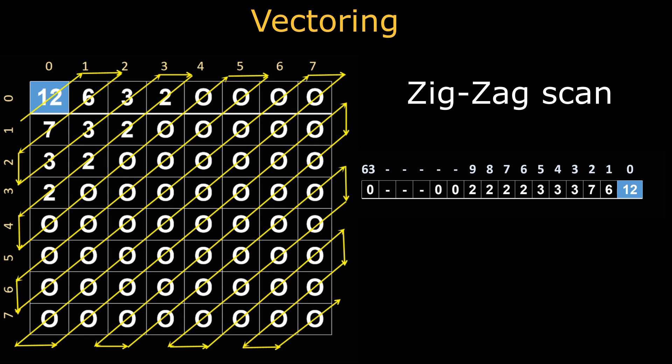In a vector there is only one DC coefficient and 63 AC coefficients. The amplitude of the DC coefficient is higher than all other coefficients present in the vector. Next we are going to see how to encode DC and AC coefficients separately.